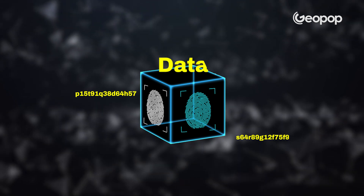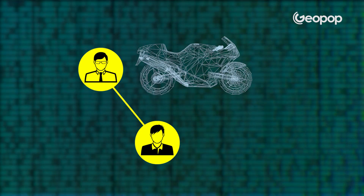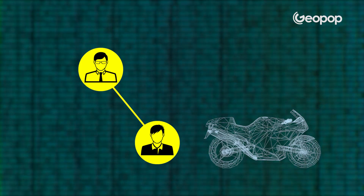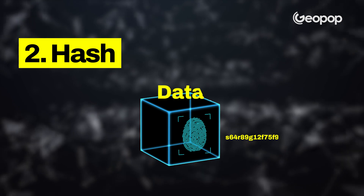This identifying code is actually called a hash. The data is the content of the information — in our motorcycle example, the transfer of ownership from me to Gabriele. In reality, each block contains lots of transactions. Then there's the hash: an alphanumeric code that makes the block unique and irreplaceable — a kind of digital fingerprint.